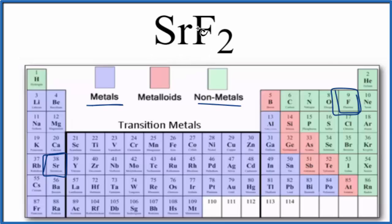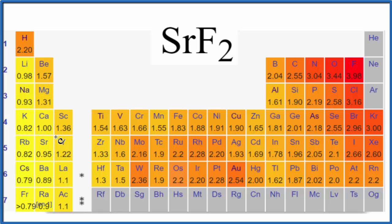But let's check the difference in electronegativity for these elements here, just to make sure. So we find strontium, which is 0.95, and we find fluorine, which is 3.98.